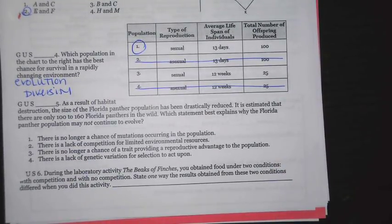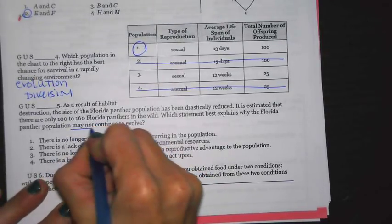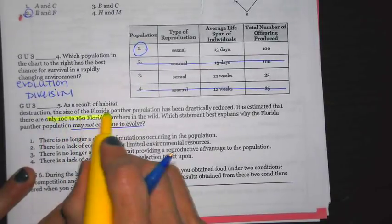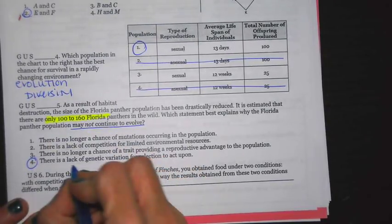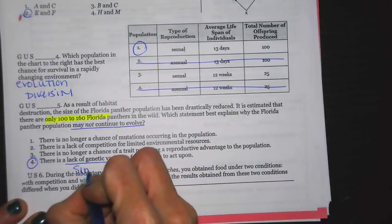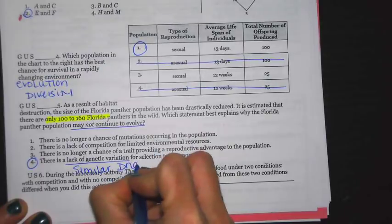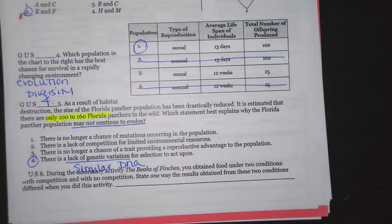As a result of habitat destruction, the size of the Florida panther population has drastically been reduced. It is estimated that there are only 100 to 160 Florida panthers in the wild. Which best explains why the Florida panther population may not continue to evolve? The population size is very small, meaning most likely there is not a lot of variety left, because they keep mating with individuals who have very similar DNA. The best answer choice is going to be four — they lack genetic variation, meaning they all have very, very similar DNA.